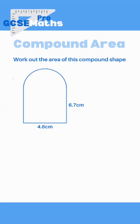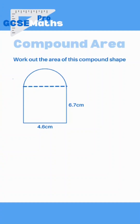Do you know how to work out the area of this compound shape? Well, first of all, what is a compound shape? It's basically a shape where we've got two or more different shapes stuck together. If you have a look at this one, we can clearly see that we've got some kind of rectangle at the bottom and a semicircle at the top. You can always draw on some lines if it helps you to visualize what type of shapes to break it down into.